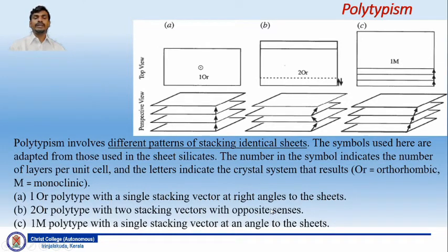In the first figure, 1OR polytype has a single stacking vector at right angles to the sheets. If you remember the direction of the vector from the previous slide, all the sheets are arranged in a single vector direction. You can call it 1OR, which is orthorhombic. 2OR polytype has two stacking vectors with opposite sense. Here the vector direction is in the opposite direction. You can name it 2OR polytype.